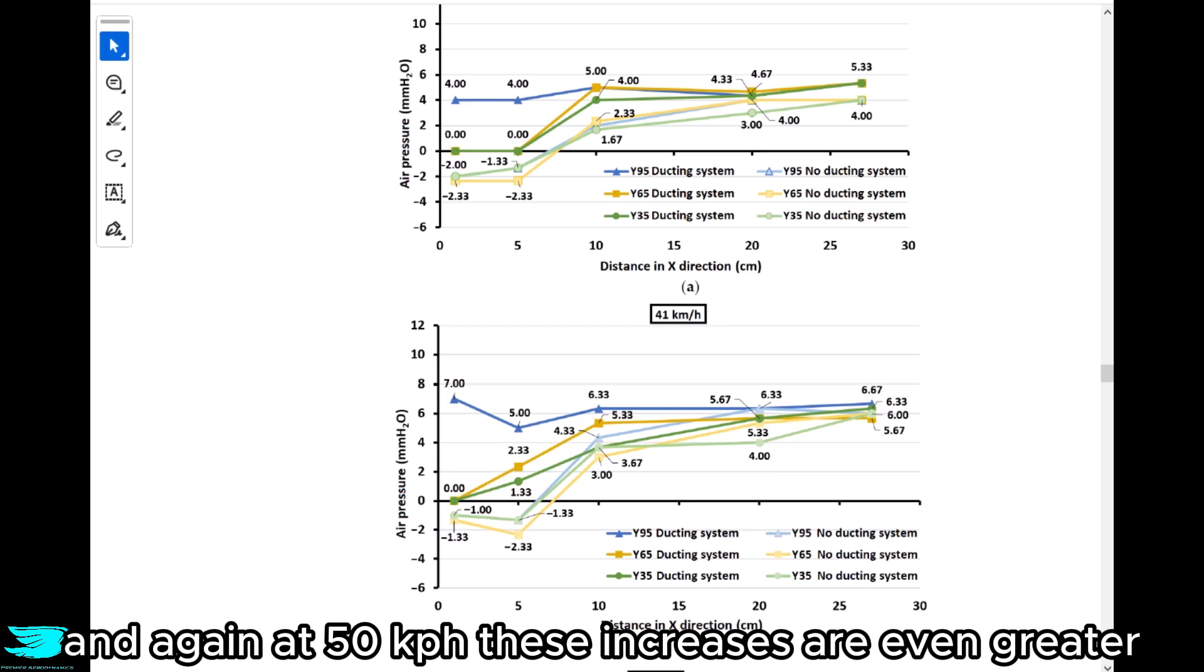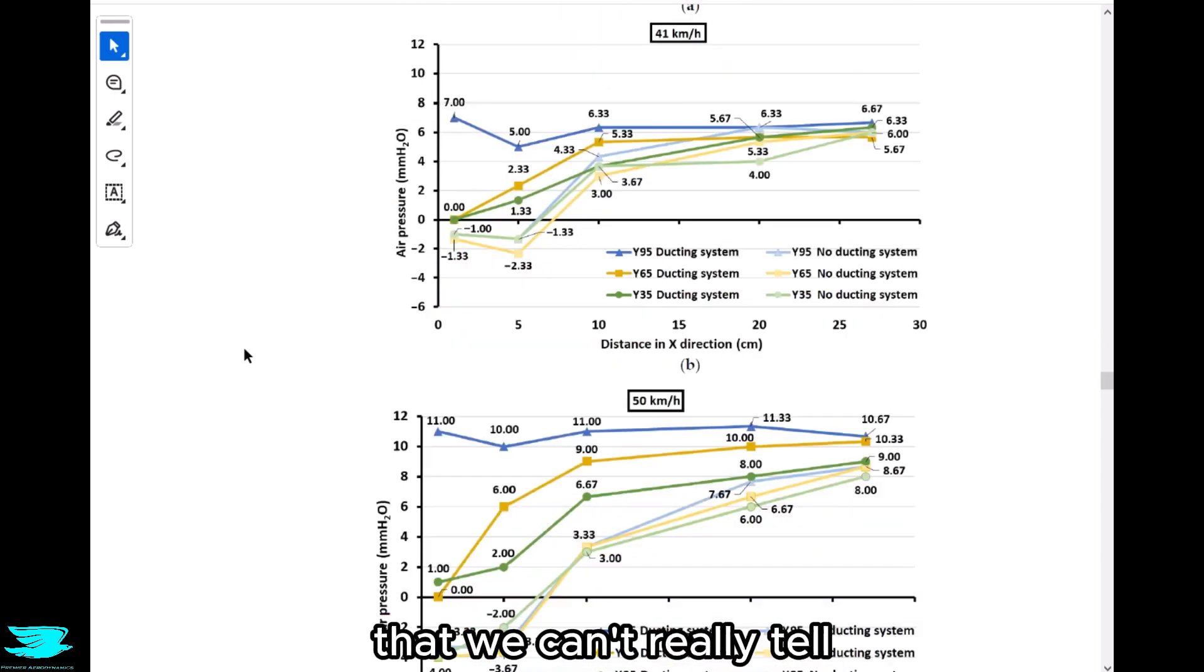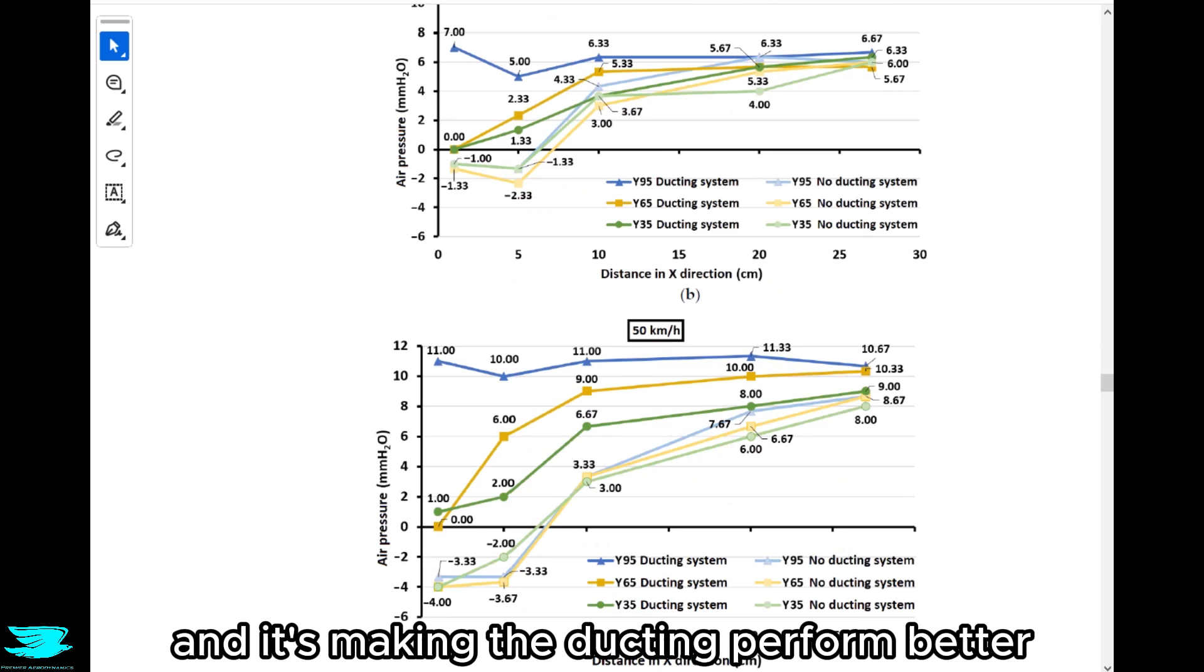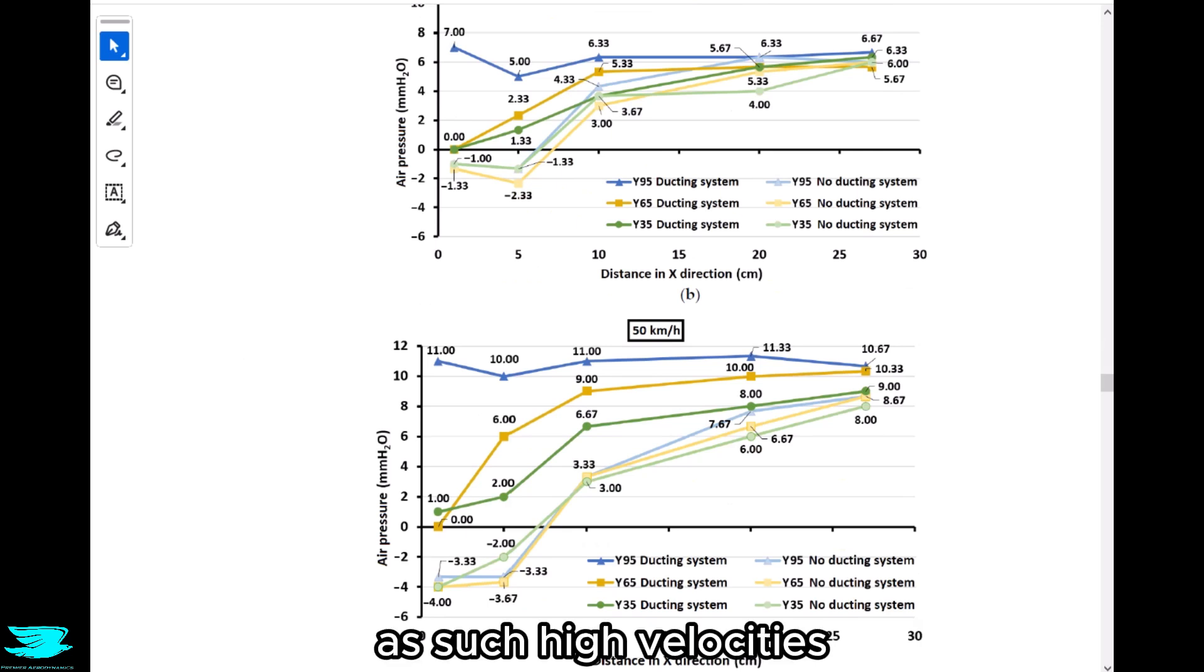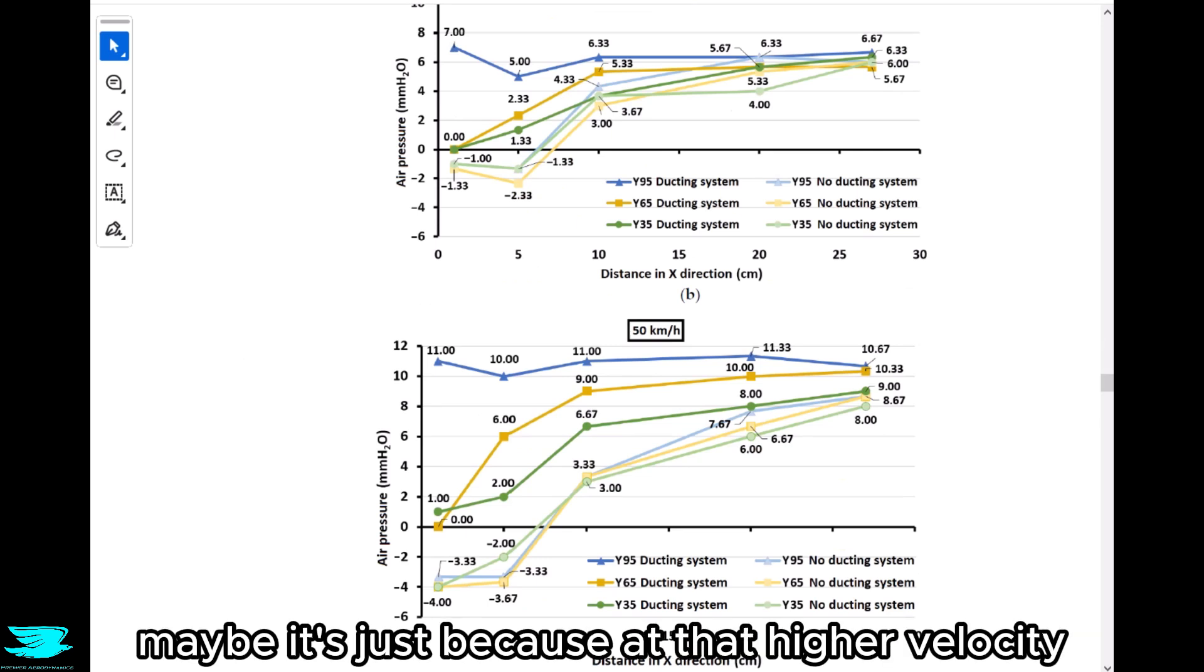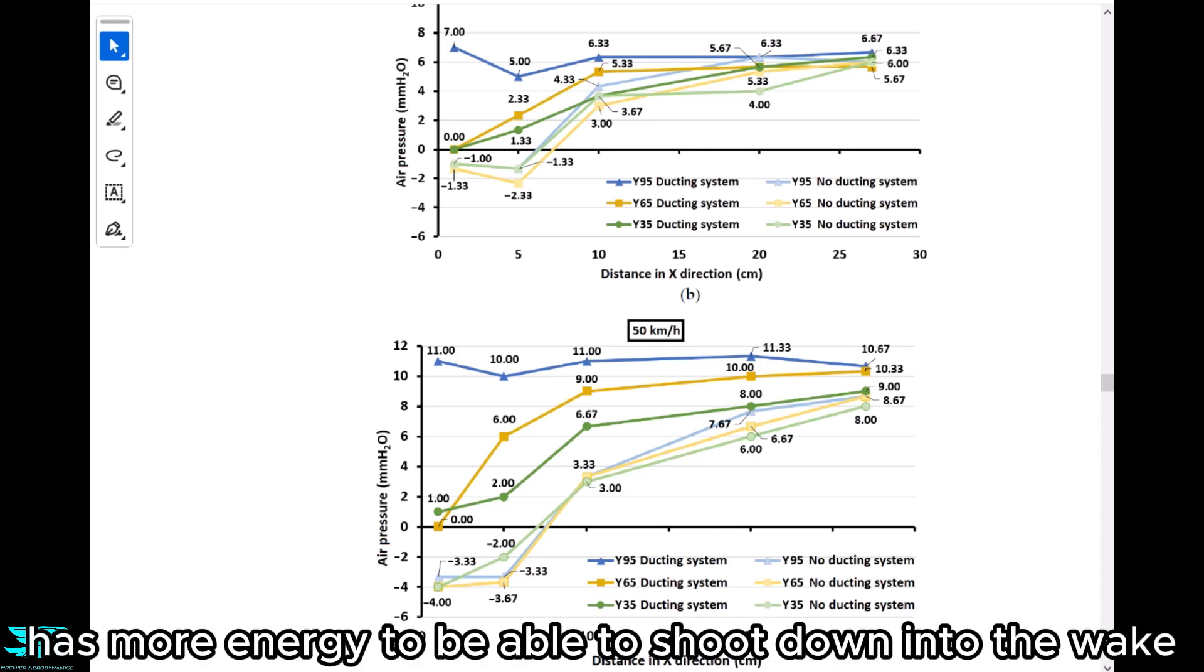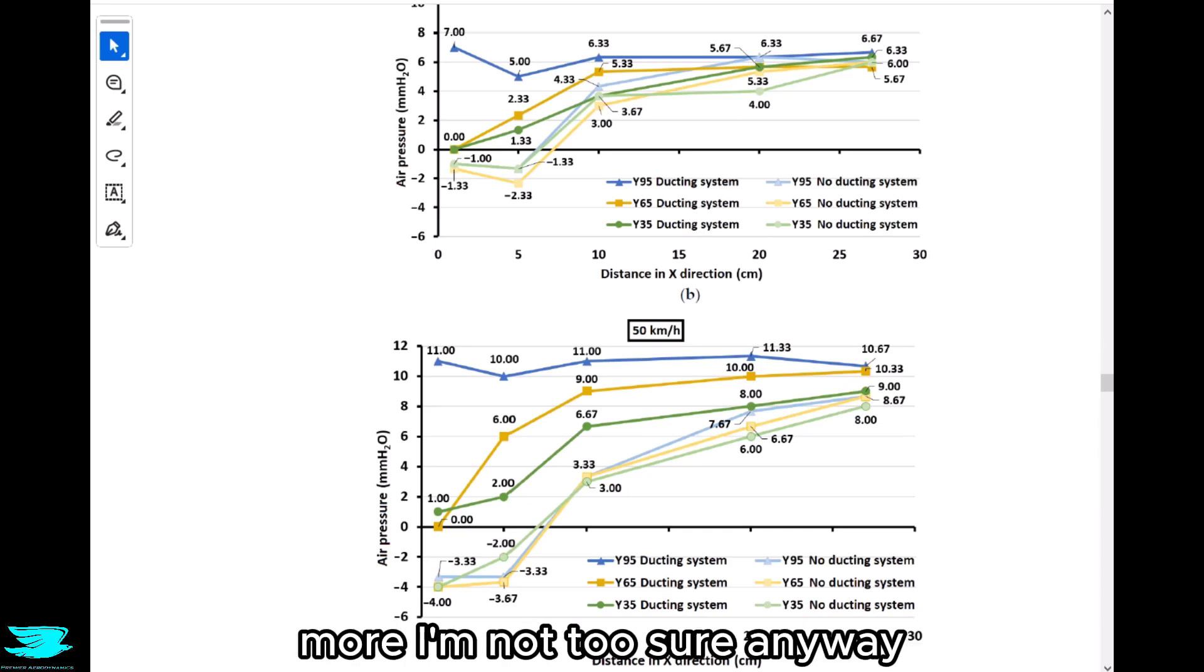And again, at 50 kph these increases are even greater. So perhaps there's something going on at 50 kph that we can't really tell, and it's making the ducting perform better. As such, high velocities would be interesting to see in the future. Like if you go to 100 kph, maybe the ducting will be even better. Maybe it's just because at that high velocity the flow has more energy to be able to shoot down into the wake more.